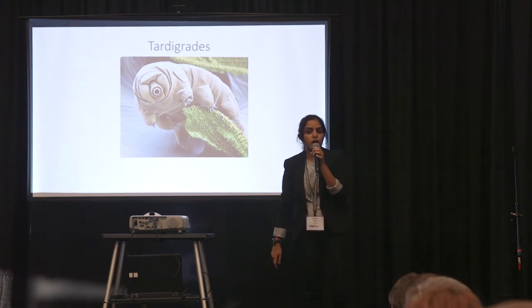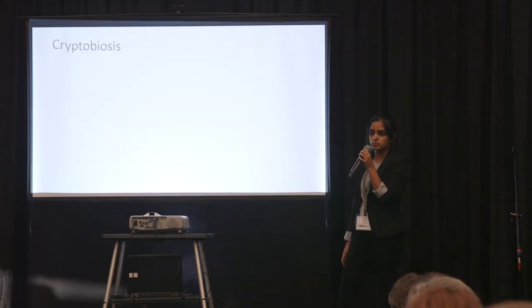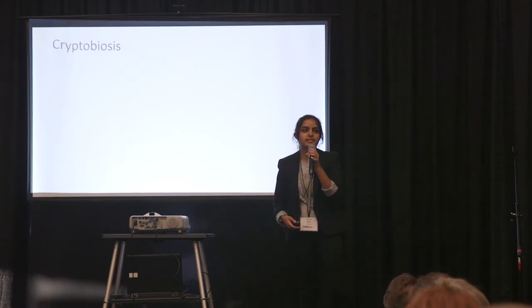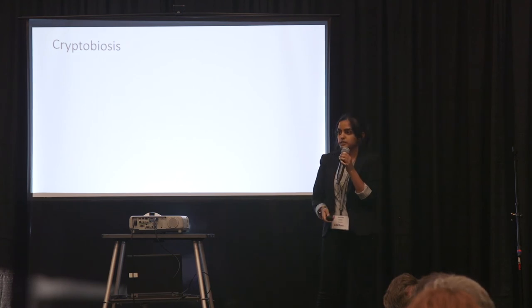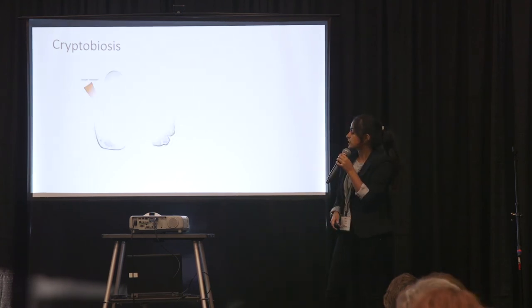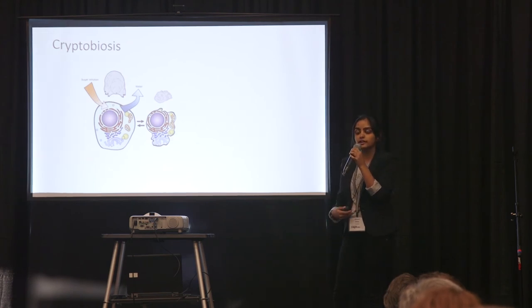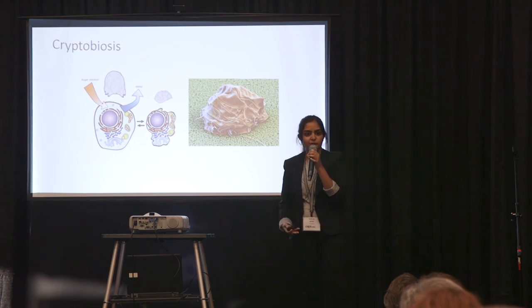So they can do all this because of a process known as cryptobiosis. Cryptobiosis is a general term to describe a state of metabolic inactivity. Basically, the tardigrades dehydrate their bodies, fill it with a sugar solution to protect their organelles, and curl into a little ball to minimize surface area and volume.